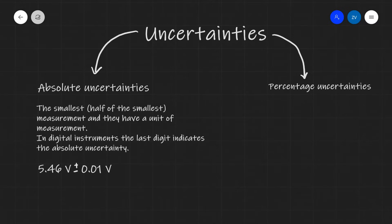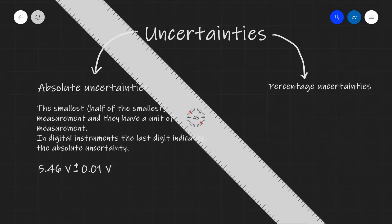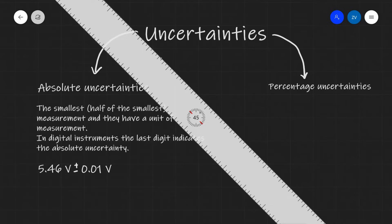For instance, if I had a millimeter ruler, the smallest measurement that I'll be able to take is a millimeter, so this will be the absolute uncertainty in my measurements.